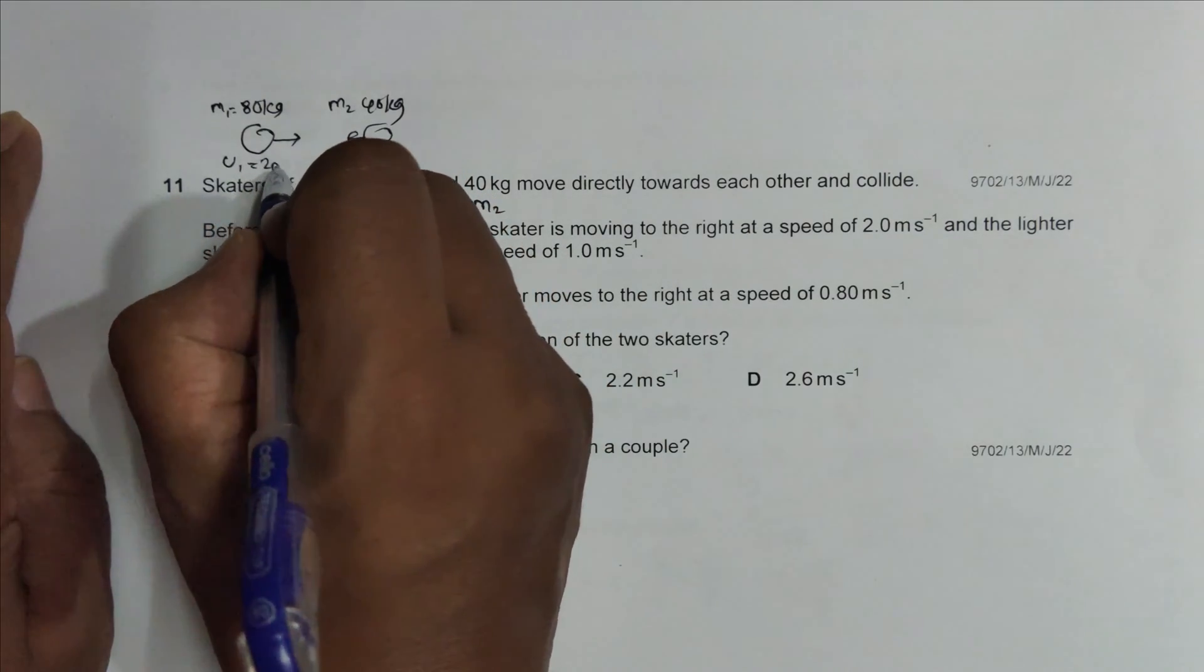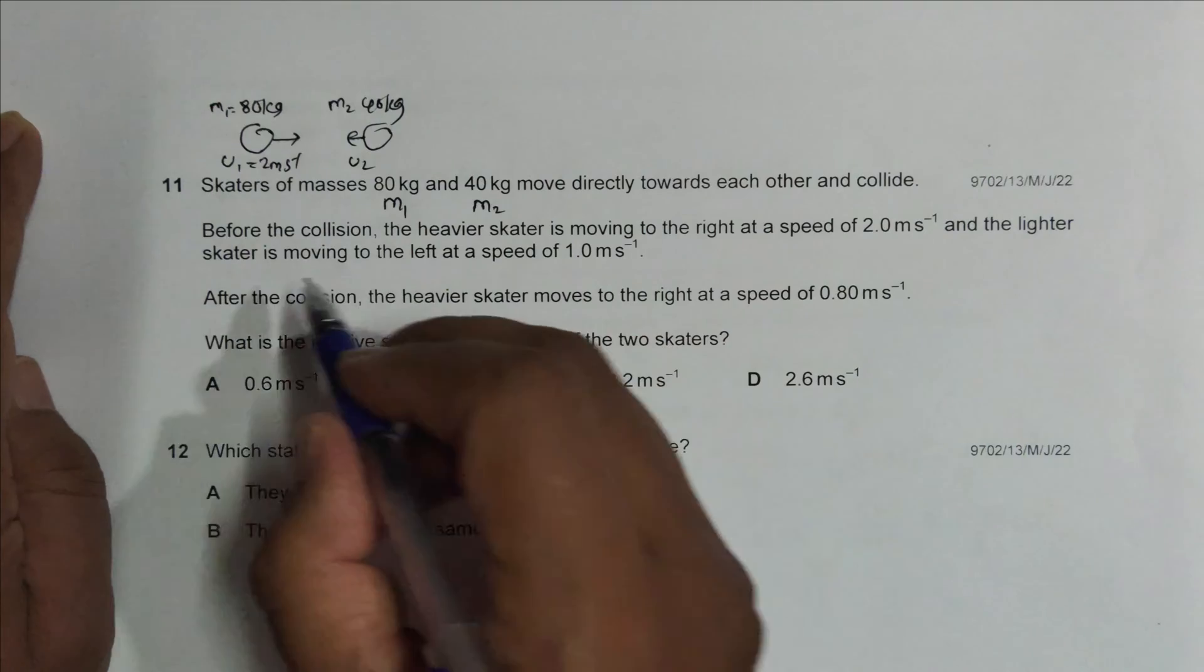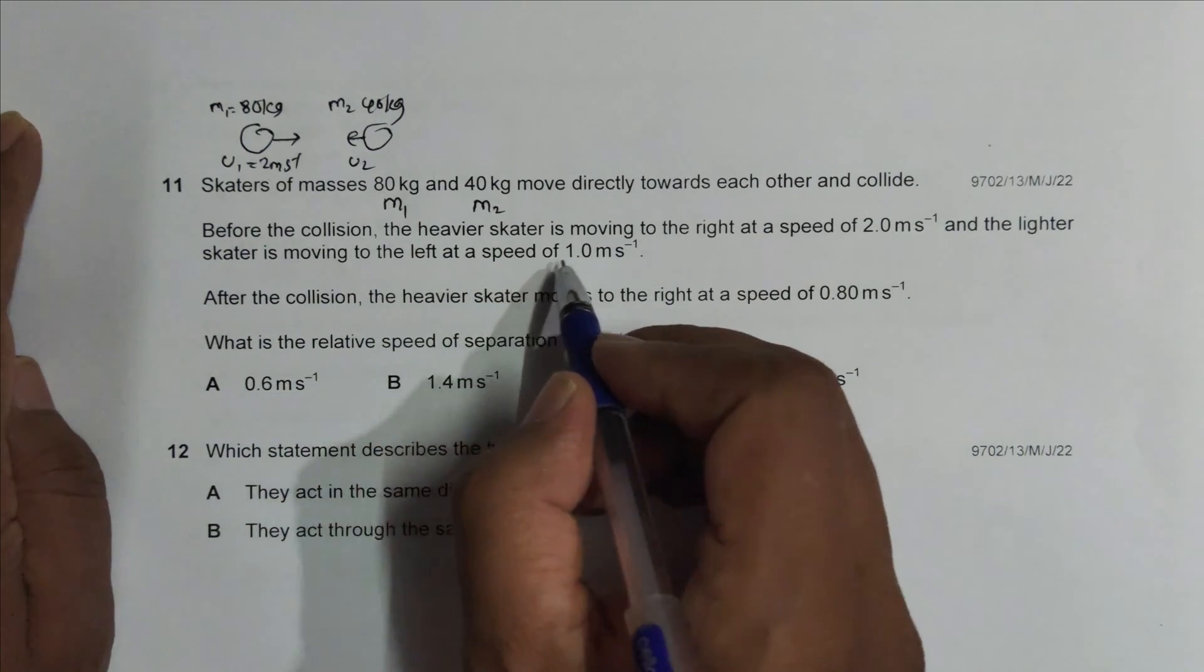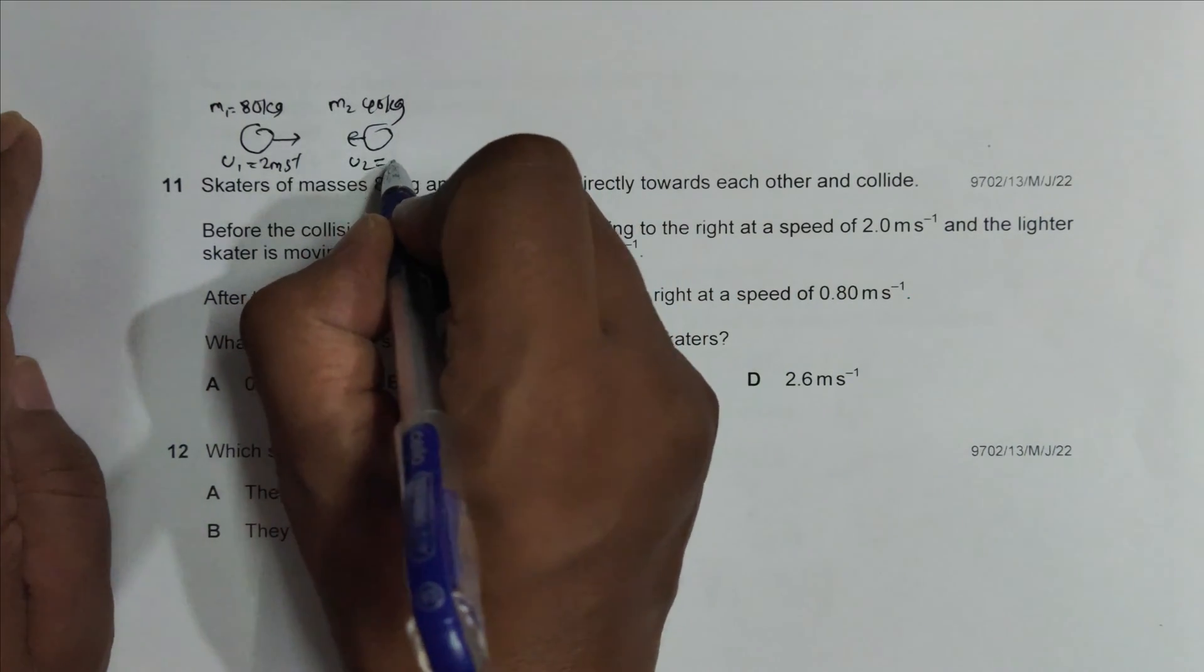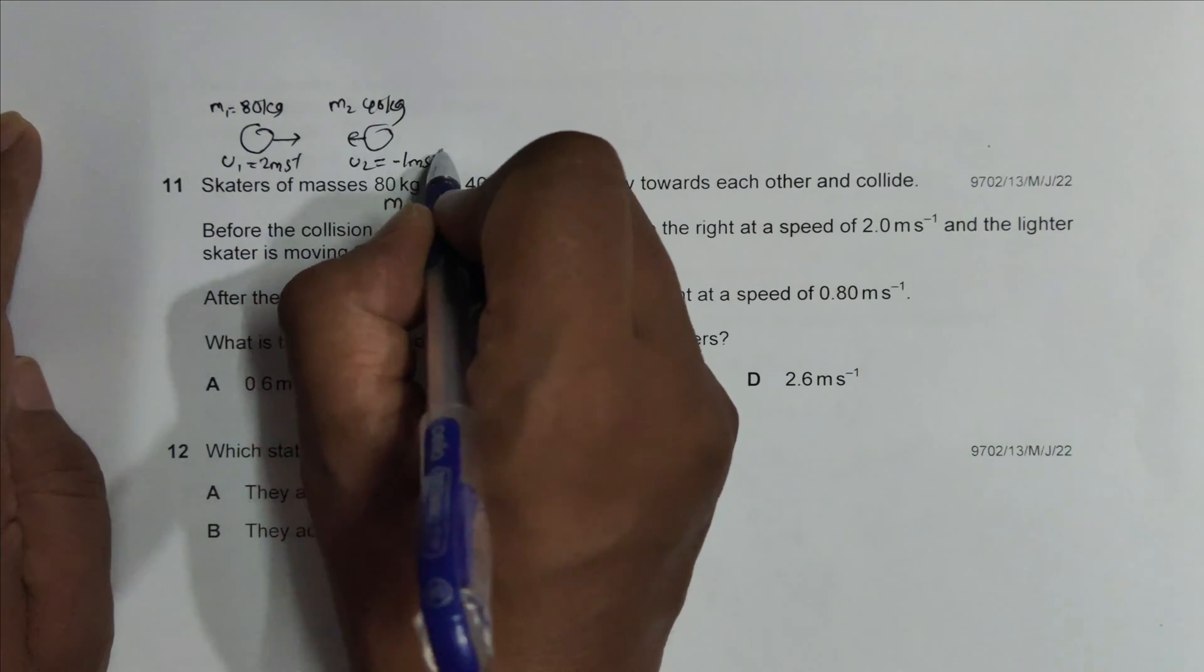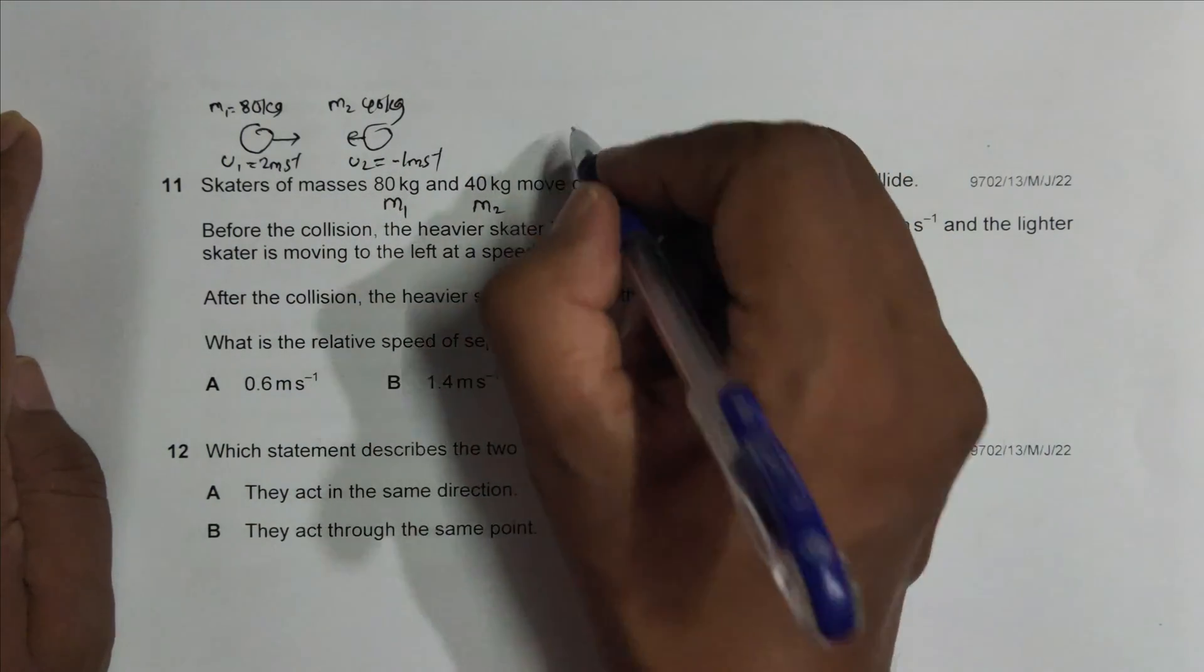so it is 2 meter per second. And the lighter skater is moving to the left at a speed of 1 meter per second, so it is left means it is minus 1 meter per second.